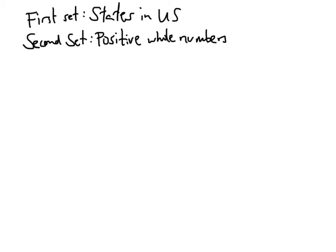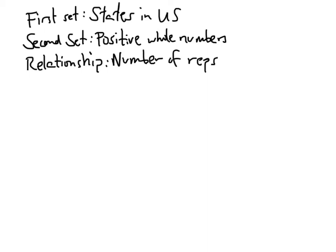We need more than just two sets — we need a relationship between those two sets. We could set up a lot of relationships here, but in this example our relationship is going to be that each state corresponds to the number of representatives that state has in the United States House of Representatives.